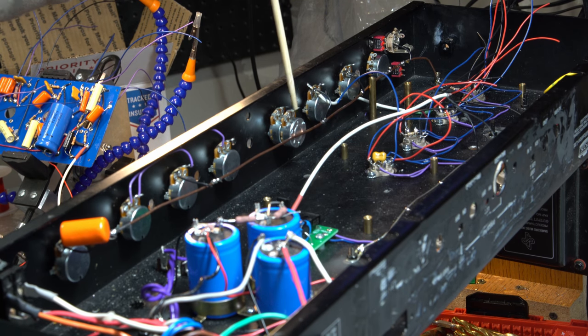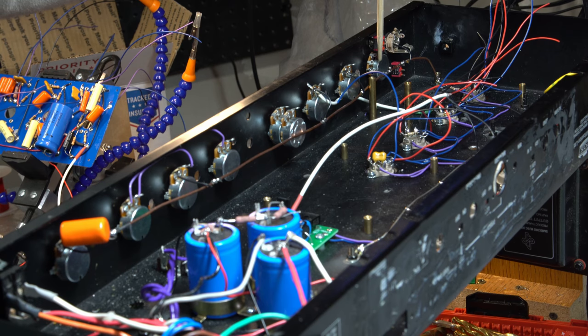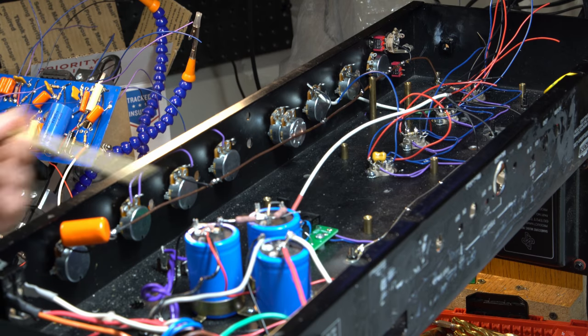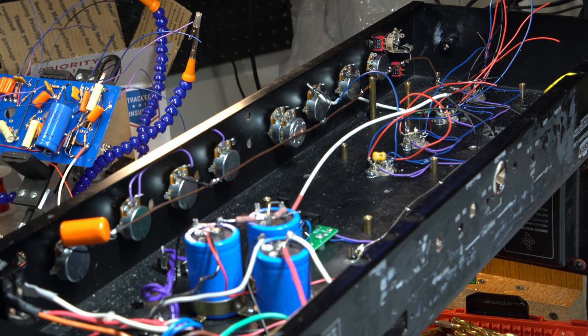So instead I've got all of my volumes are on this side. So I've got the Plexi normal, Plexi bright, and then I've got the JCM 800, and then I have the master volume and then I'll have treble, middle, bass, and then presence. So your tone adjustments will be here and all of your volume adjustments will be over here. It just balanced out better with the way this front panel was already drilled.